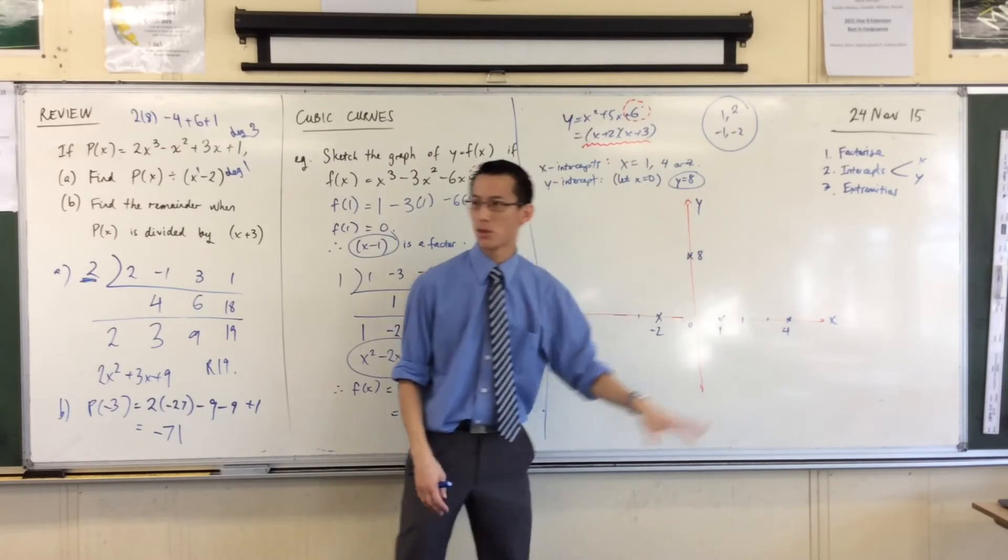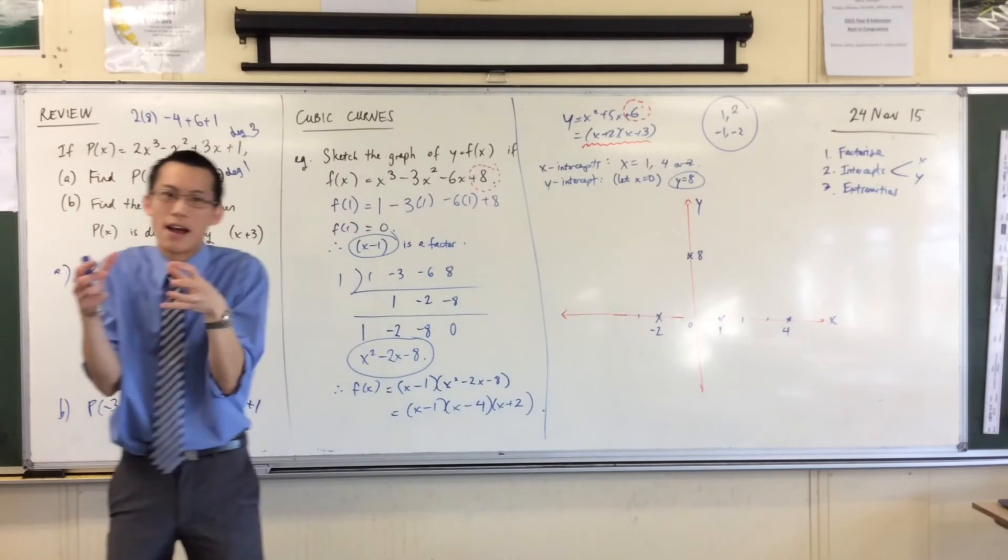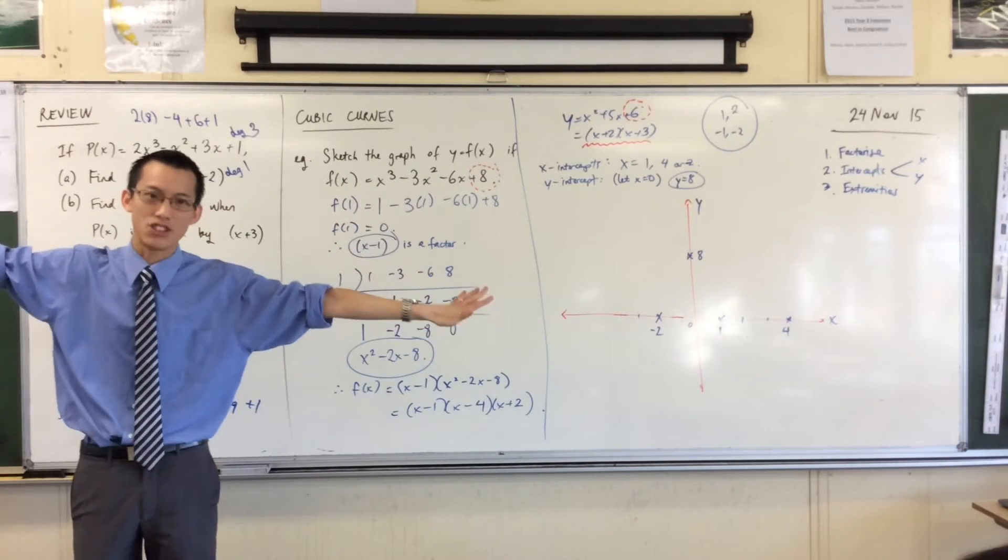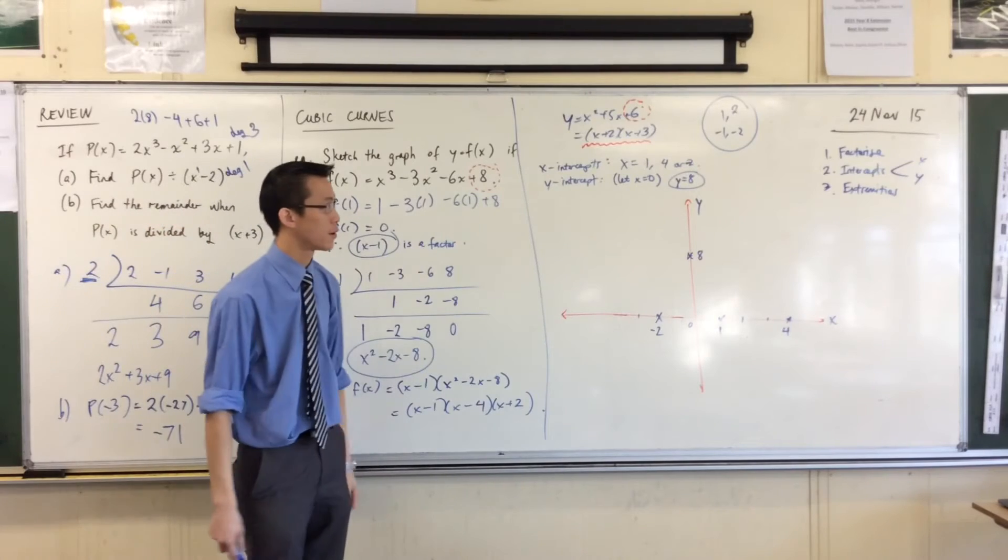Extremities means, like, if you talk about the extremities of your body, that's kind of like your hands and feet. It's far away from the center. So when I say extremities, I mean, what happens for really, really negative values? What's happening over here? And what's happening for really positive values? What's happening over there? All of these four points that I've just drawn, they tell me what's happening in the middle of the graph, but what about what's happening out at the edges?